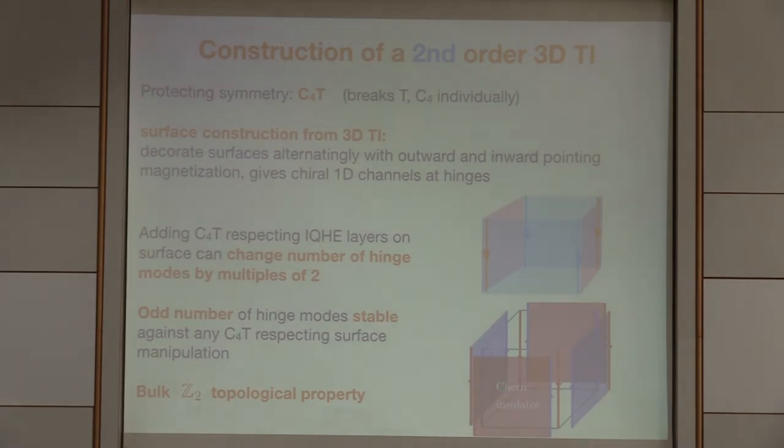Now I have to do that in a way that preserves C4 times time reversal. Let me decorate the surface with four of these Chern insulators in a C4 times time reversal symmetric fashion. Then what happens is these Chern insulators contribute at every hinge two extra hinge modes, but they are going in parallel, because of C4 times time reversal. So from one hinge mode going down, I could go to one minus two is minus one plus two, like one hinge mode going up. I've changed the number of hinge modes, but I've changed them by two with this surface manipulation. So the fact that I had an odd number will always prevail, and that is protected. We found a sort of Z2 classification, a topological classification here.